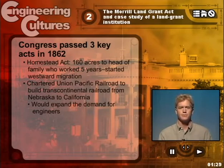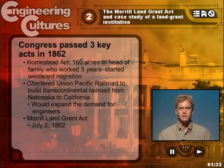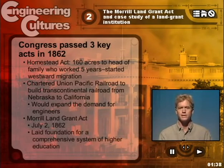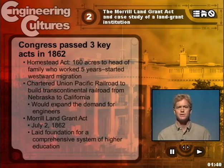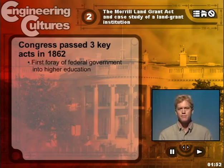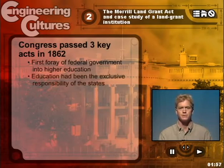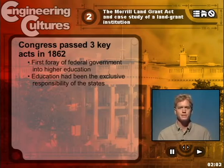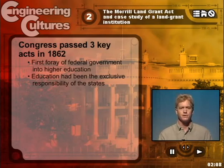The third was passage of the Morrill Land-Grant Act, July 2nd, 1862, which laid the foundation for a comprehensive system of higher education and constituted really the first foray of the federal government into the area of public education. The Constitution reserved for the states all authority except for authority that the federal government specifically took for itself, and education throughout the history of the United States has been primarily the responsibility of the states. For that reason, there was considerable resistance from the states to any ideas that involved federal support for education.